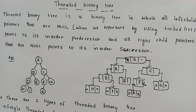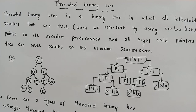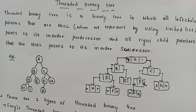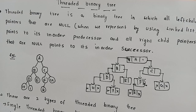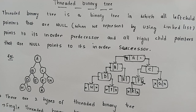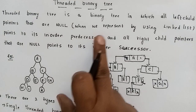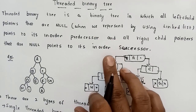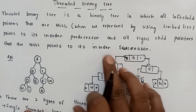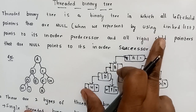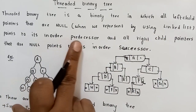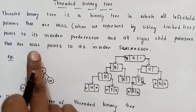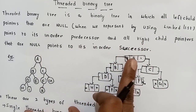We will use the Linked List Representation of the Binary Tree concept. A Threaded Binary Tree is a binary tree in which all left child pointers that are null, when represented using the Linked List, point to its in-order predecessor, and all right child pointers that are null point to its in-order successor.